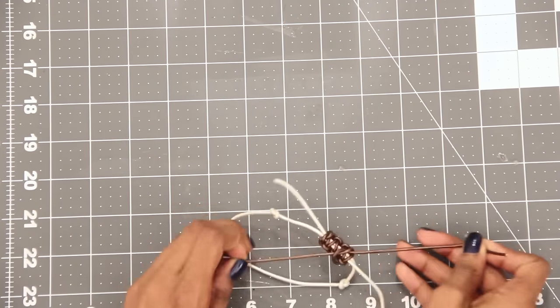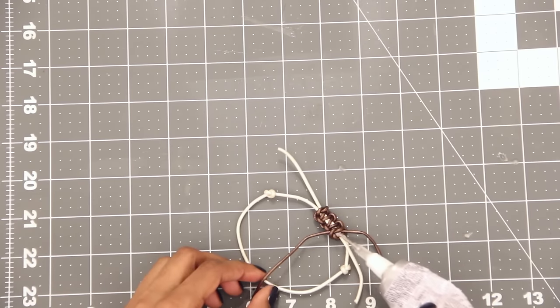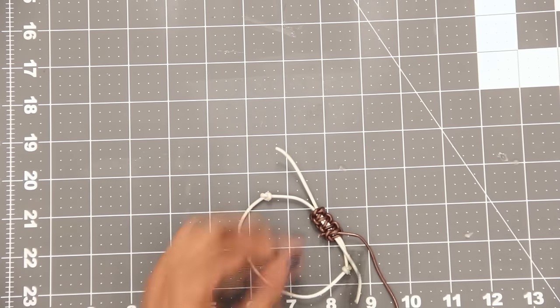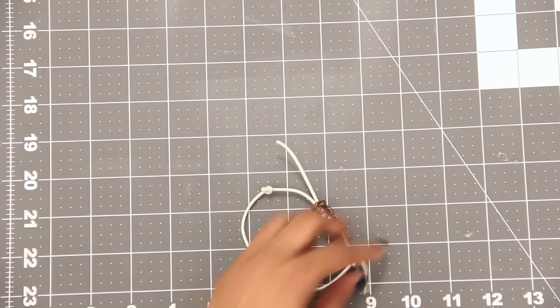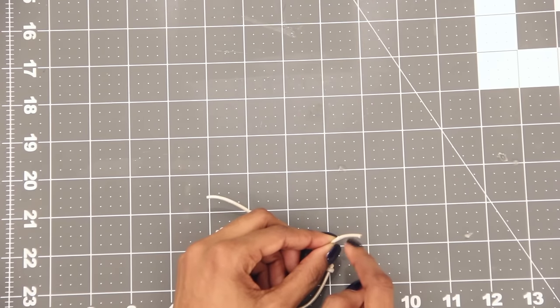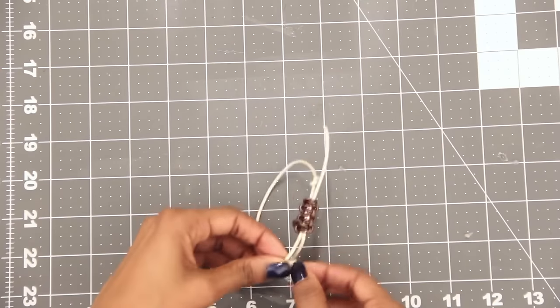I'm finishing the closure with one more overhand knot. Then you can seal this with glue before trimming the ends. You'll also want to make sure that you have knots at each end of the bracelet so that the sliding closure doesn't slip off.